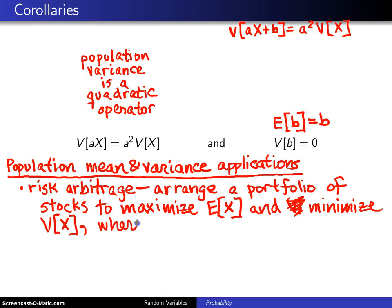So again, I'm defining X to be the return and we want the largest return we can get in terms of the expected value of the return, but we want as little volatility as possible, so we want to minimize the two. Those two are often in conflict, but that's at least the general goal of risk arbitrage.